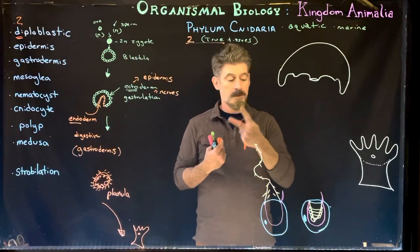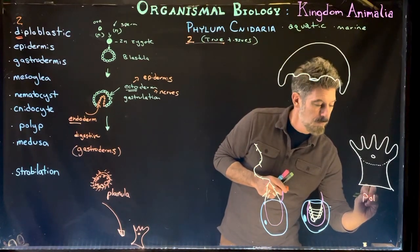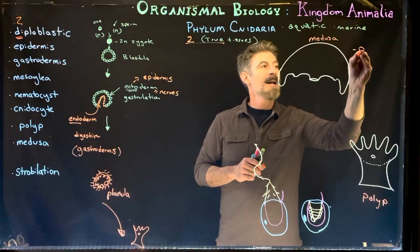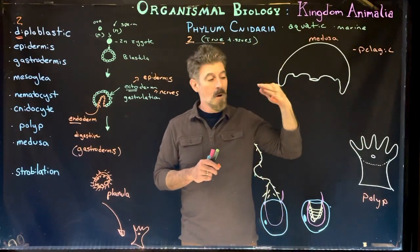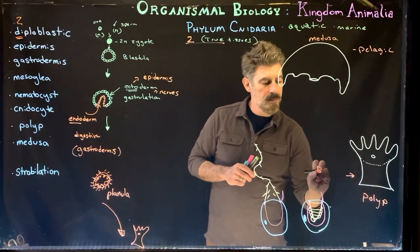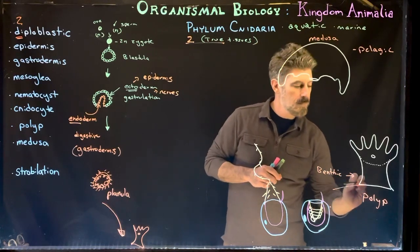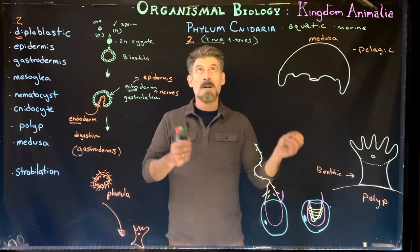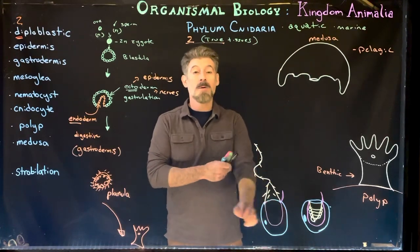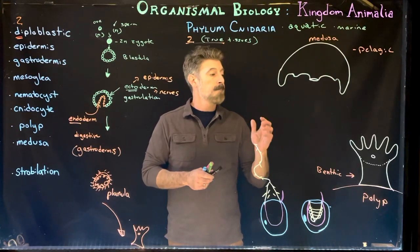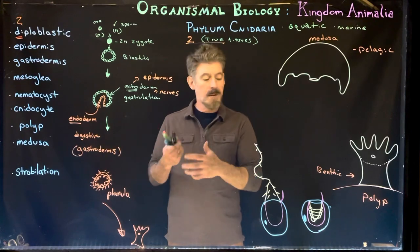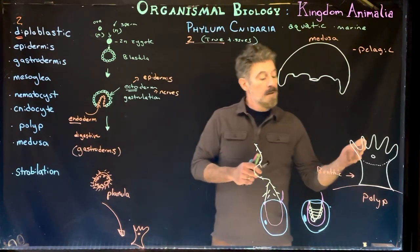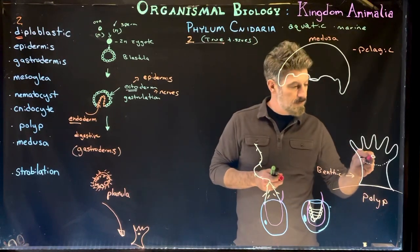Cnidarians generally have two major forms: the polyp form and the medusa form. The medusa is generally a pelagic form — up in the water column — whereas the polyp is a benthic form, found on the bottom, attached to a surface. They can attach to a variety of things: shells of other organisms, dead skeletons of other cnidarians, and a variety of other hard surfaces.